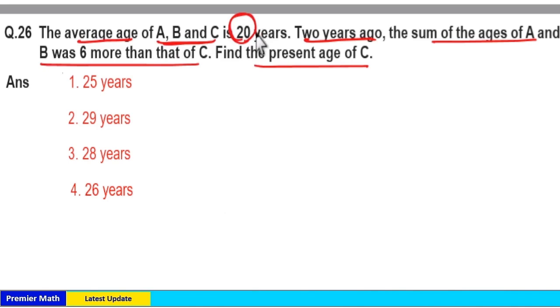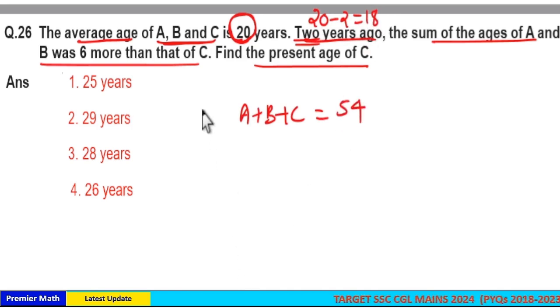Currently, average age of A, B and C is 20 years means 2 years ago, average was 20 minus 2, 18 years. Which means sum of ages of A, B and C 2 years ago was 18 into 3, 54 years.